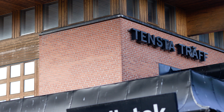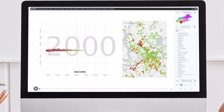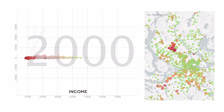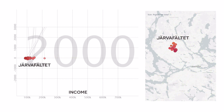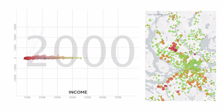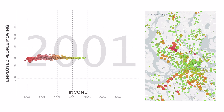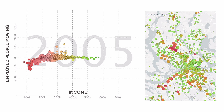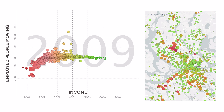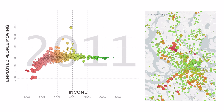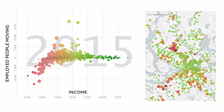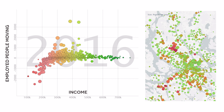Right now we are at Tensta Träff, a meeting place in Järvafältet. We will look specifically at Järvafältet and add a whole new parameter: people who are employed and move in the region. Bubbles moving down in the graph are losing employed inhabitants and those moving up are gaining employed inhabitants.